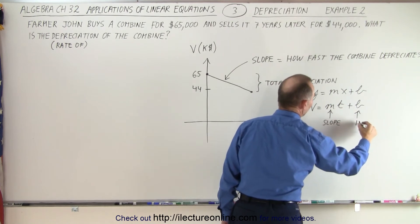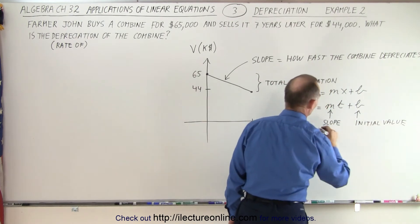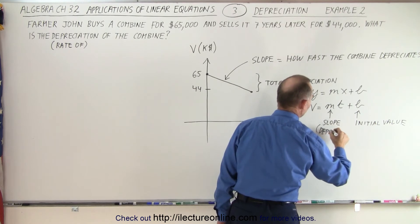Remember, the slope is the indication of the depreciation. And b is, of course, the initial value. So the slope represents how fast things are depreciating.